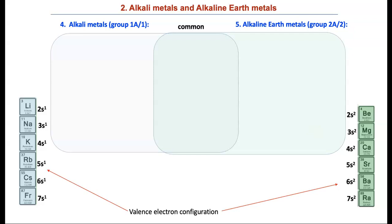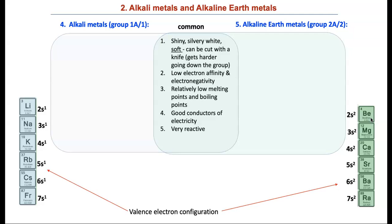Now let's compare and contrast alkali metals and alkaline earth metals. Alkali metals are group 1 elements and alkaline earth metals are the second group. They have S2 electron configuration. They are also in S block. Things in common, they are very shiny, white and soft. They can be cut with a knife. As you go down the group, they get harder to cut. They have low electron affinity and electronegativity, relatively low melting and boiling points. They are good conductors of electricity and they are extremely reactive.